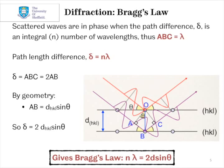Therefore, our path length difference, δ, must equal 2d sin θ. And this gives rise to Bragg's law, nλ = 2d sin θ.